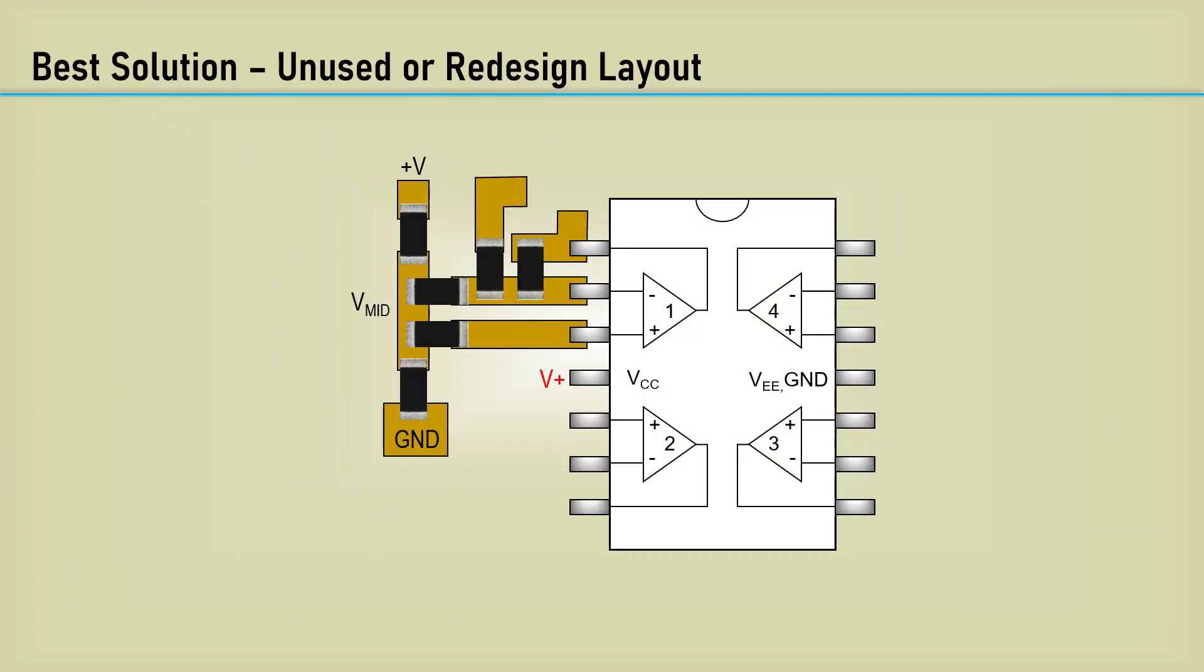I think the best solution for the unused section is to use zero ohm resistors for the unity gain follower connection. They can be removed to implement this amplifier section if needed as an extra amplifier for future design changes. An open set of pads for a resistor makes for a way of connecting the amplifier as an inverting or non-inverting configuration with gain if needed in the future.